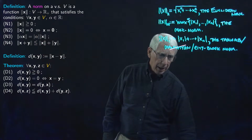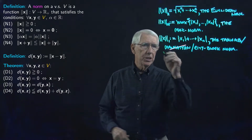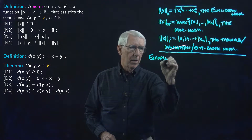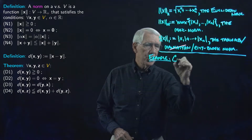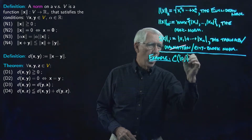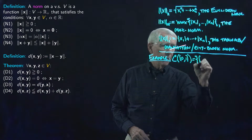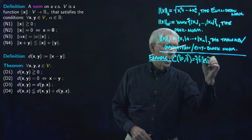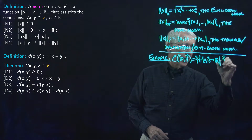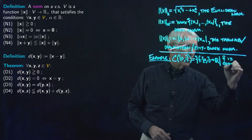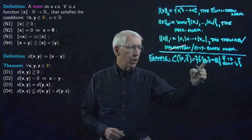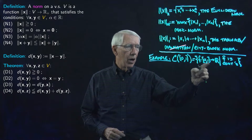Our first example is C of the interval [0,1], which is the set of all real-valued continuous functions defined on the unit interval. So this is the set of all continuous functions defined on the unit interval on the real line.